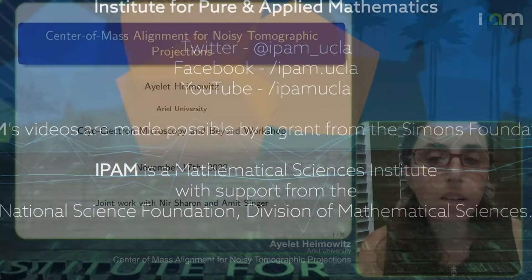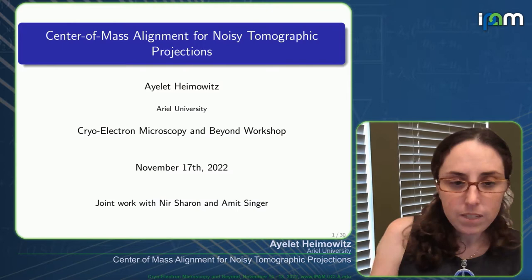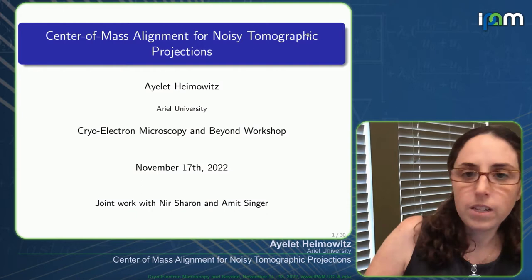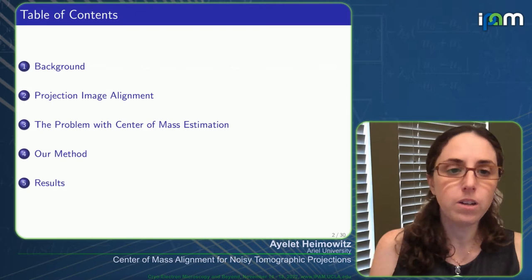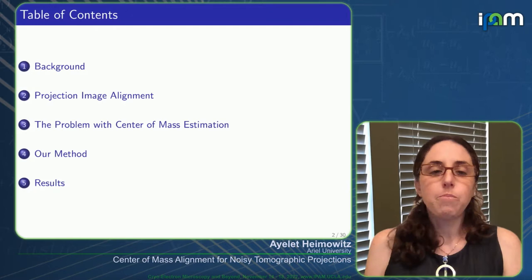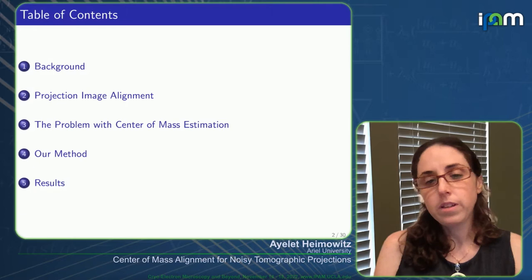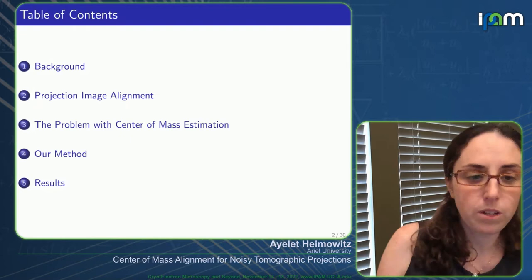What I'm going to be speaking about is our work on aligning and centering the atomic graphic projections that we use in order to reconstruct 3D volumes. My talk is based on a joint work with Nir Sharone and Amit Singer, and will have a few parts: background that I think all of you probably already know, our idea for aligning projection images regardless of their angle of projection, the connection to the center of mass, the problem with estimating center of mass in noisy cryoelectron microscopy projections, and our methods and results.